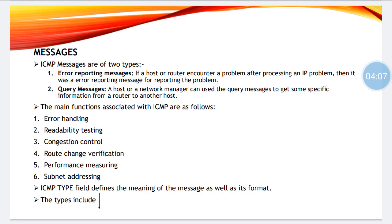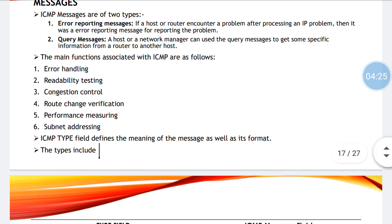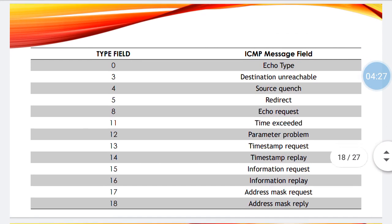Route change verification — if the packet has to be sent from a particular route but that route now has traffic, the route has to be changed, and verification for the same is done by ICMP. It also measures performance, devises addresses (that is subnet addressing), and it has some type fields, the meanings of which are in the next slide.